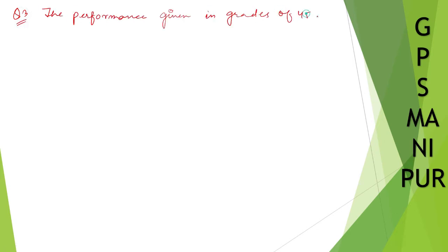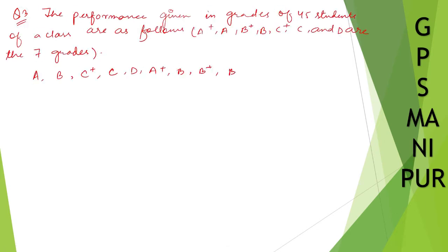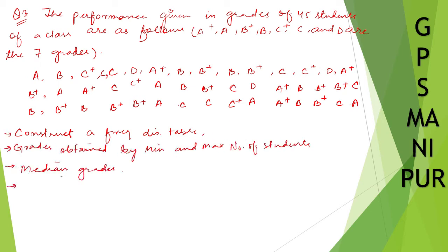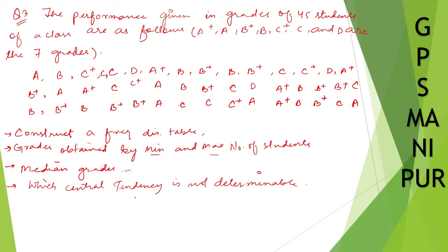We are doing exercise 14.1, question number three. The question given is: the performance given in grades of 45 students of a class. We need to construct a frequency distribution table, find the grades obtained by minimum and maximum number of students, find the median grade, and find which central tendency is not determinable.